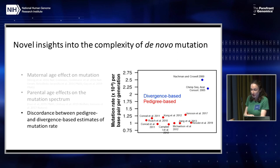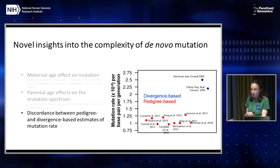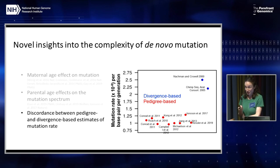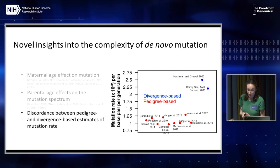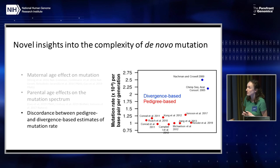A third key insight from whole genome sequencing in human pedigrees is that direct pedigree-based estimates of the mutation rate don't really line up very well with prior estimates based on human–chimpanzee divergence. This difference may be due to a change in the mutation rate itself, but it could also be due to the evolution of life history traits that influence mutation — things like parental age at conception and age of onset for puberty — representing flagrant violations of the molecular clock assumption invoked in divergence-based estimates.